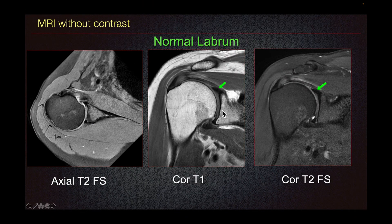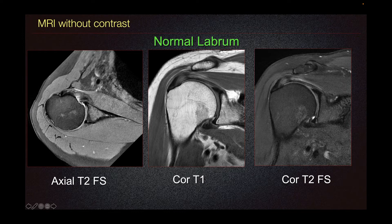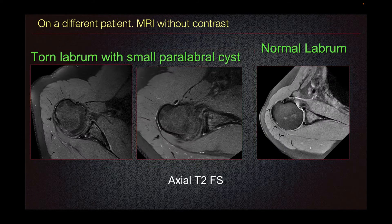The superior labrum is best depicted on our coronal imaging, such as this in T1 and T2 fat sat, showing normal morphology without increased signal in them.